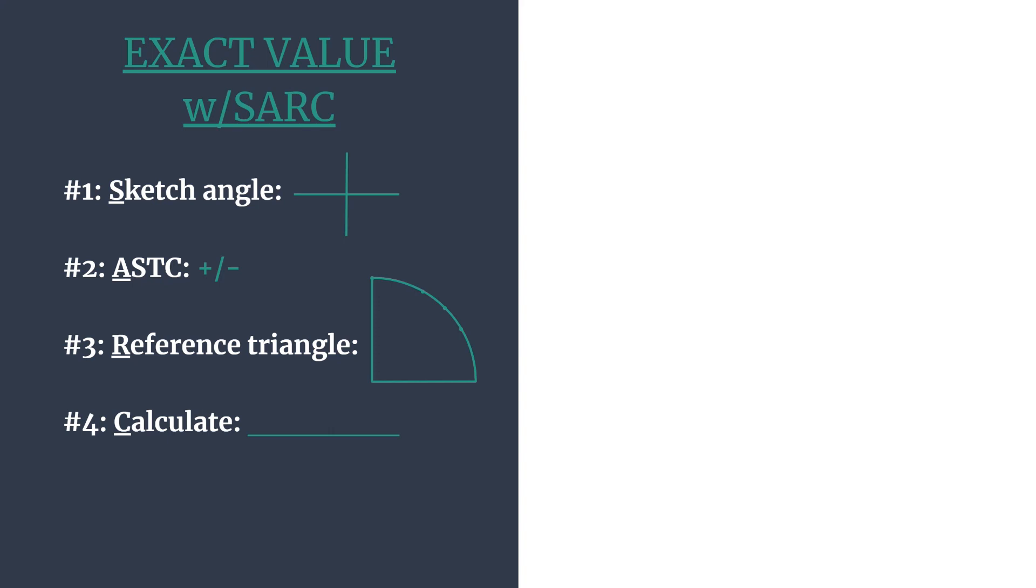And the SARC stands for: 1. Sketch the angle. 2. ASTC is the acronym to help us decide if our final answer should be positive or negative. R is to find the reference angle, and thus the reference triangle and unit circle coordinates that we will work with for step 4, our calculation.